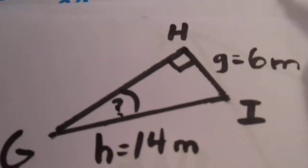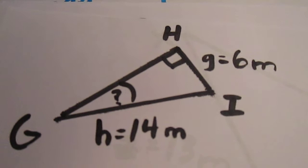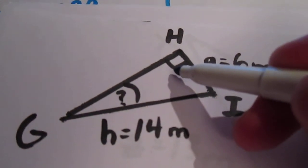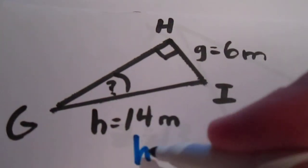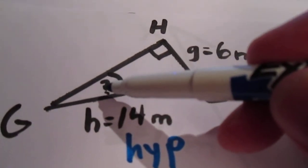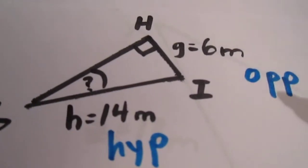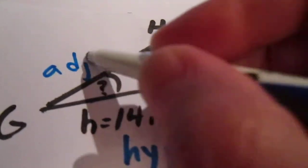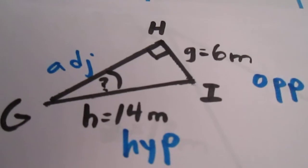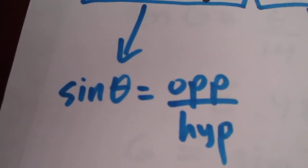In our next question, we're looking for the magnitude of an angle. Our first step is to figure out which side is the hypotenuse — always find the hypotenuse first. This side is the hypotenuse. This is the relevant angle because it's the one we're looking for. With respect to it, this side is the opposite and this side is the adjacent. Now we have a situation where the relevant sides are opposite and hypotenuse, so going back to SOHCAHTOA, sine will be the relevant trig ratio: sine theta equals opposite over hypotenuse.